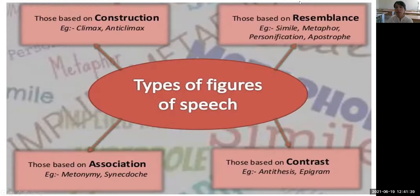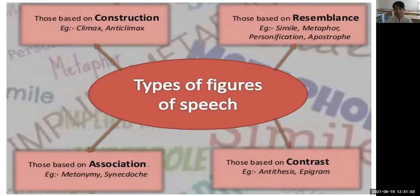According to resemblance — that is, similarity — there are simile, metaphor, personification, and apostrophe. According to association, there are metonymy and synecdoche. According to contrast, there are antithesis and epigraph as types of figures of speech. Now, students, let's learn these one by one.